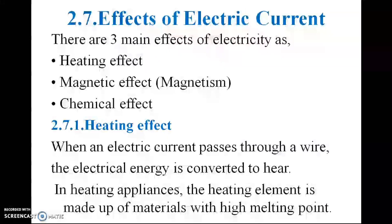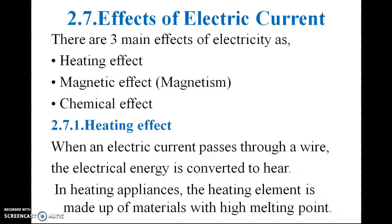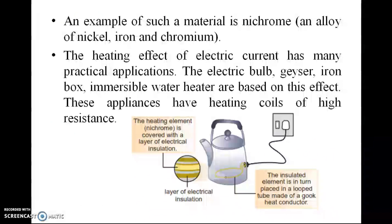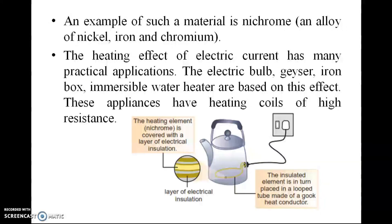There are three main effects of electricity: heating effect, magnetic effect, and chemical effect. When an electric current passes through a wire, electrical energy is converted to heat. In heating appliances, the heating element is made of a material with a high melting point, such as nichrome — an alloy of nickel, iron, and chromium. Electric bulbs, geysers, irons, and immersion water heaters are all based on this heating effect, using a coil of high resistance.